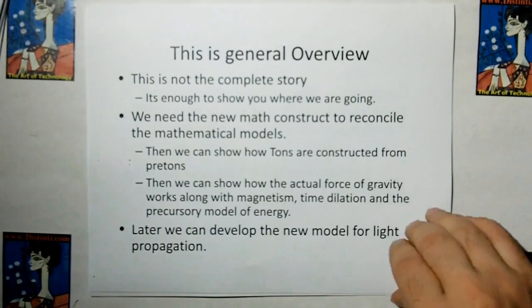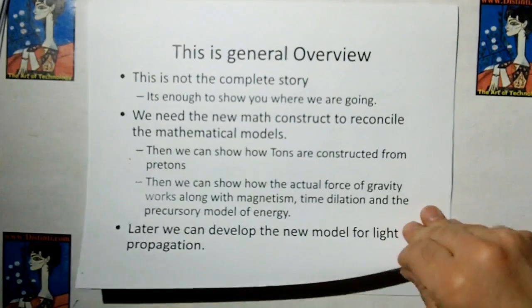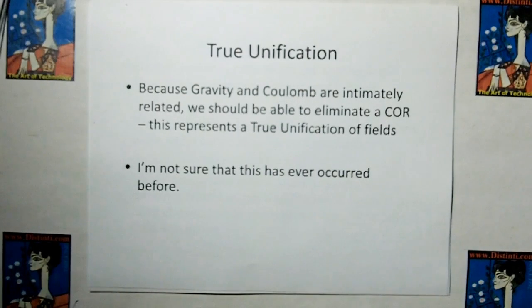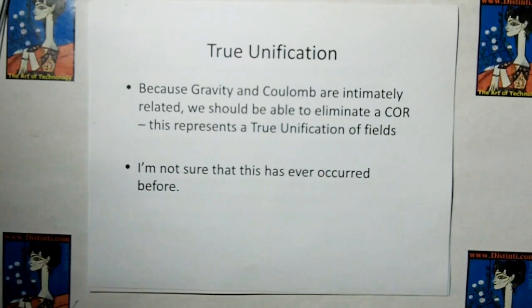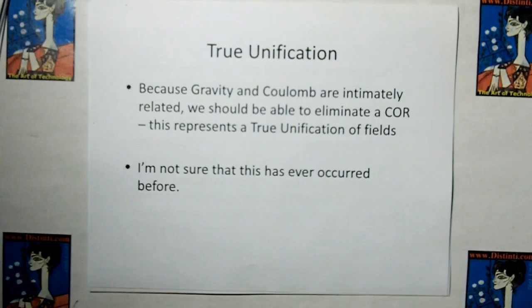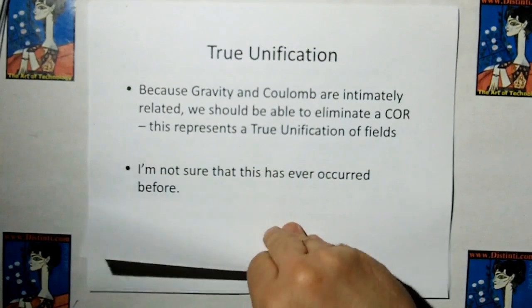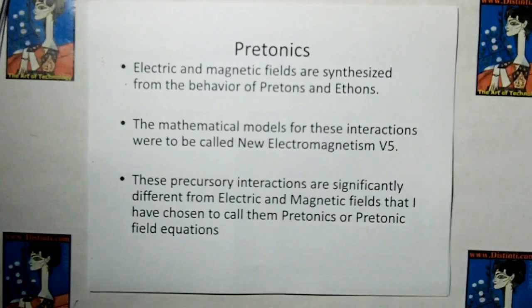Later we can develop the new model for light propagation, and because gravity and Coulomb are intimately related, we are going to eliminate a constant of relation. This represents a true unification of fields, because we're getting rid of these constants of relation, which are basically just the earmark of empirical data. I'm not sure this has ever occurred before, but I haven't really looked.